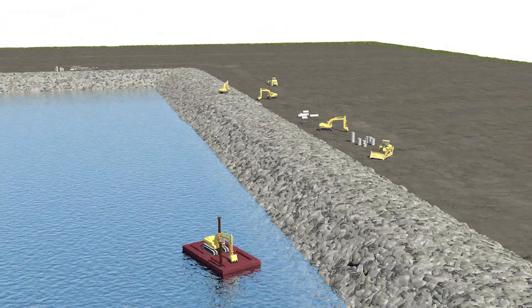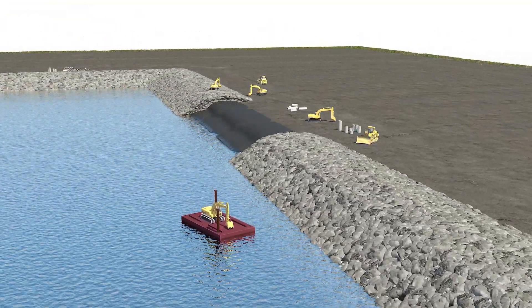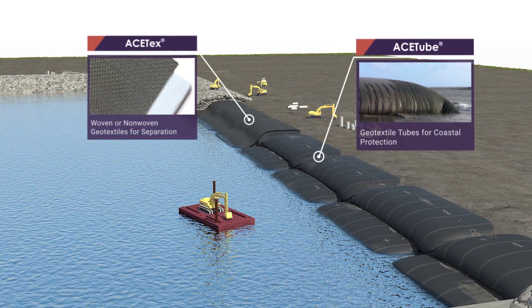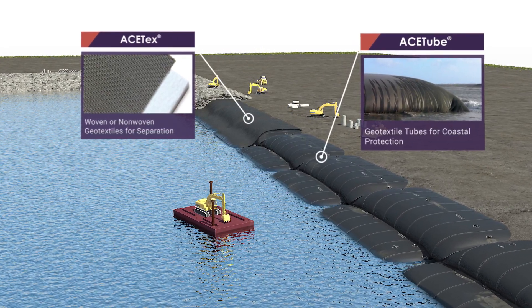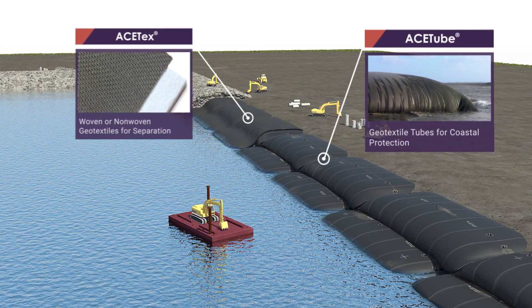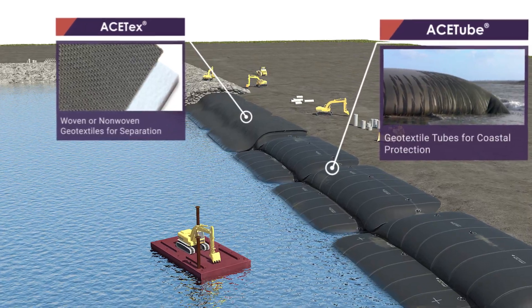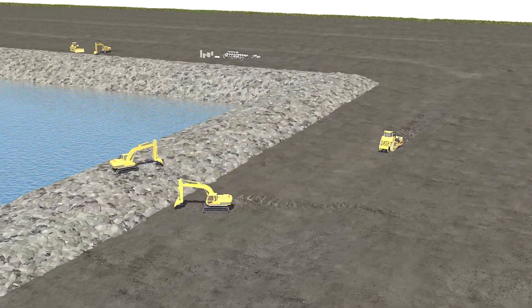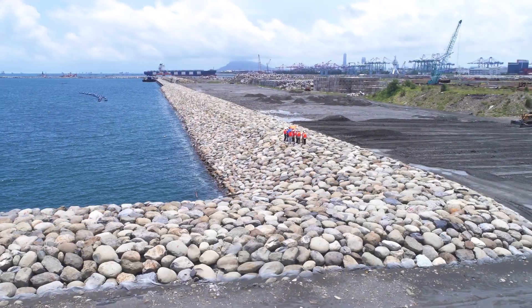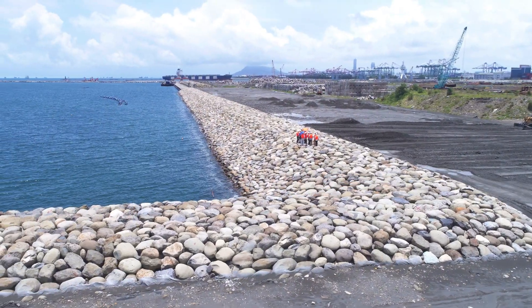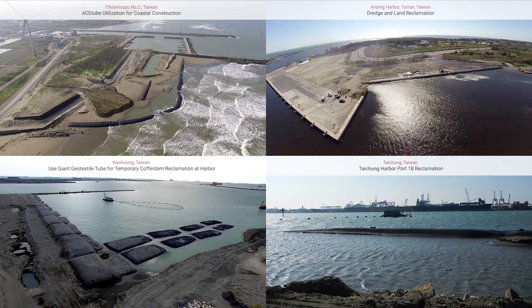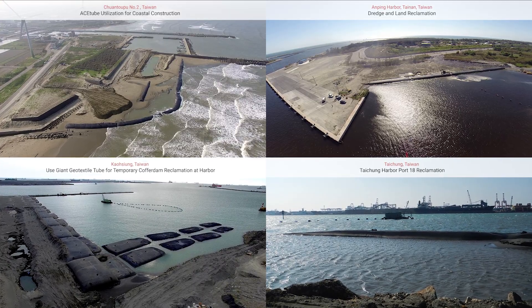Land Reclamation: Utilizing ACE tube geotextile tubes to build coffer dams along the coast as sand trapping barriers is a cost-effective way to create new lands from oceans or riverbeds. The geotextile tubes are easy for underwater construction. With geotextile tube, it can prevent the reclaimed tidal land from threats of wave erosion and enhance the stability of the backfilled area.